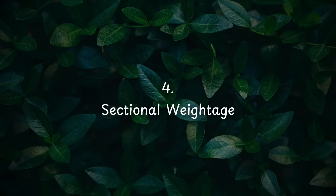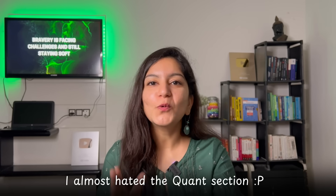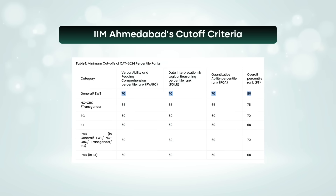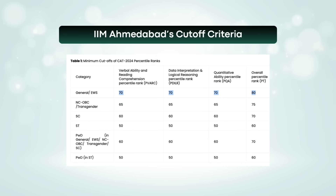The fourth point is sectional weightage — understanding which section carries what importance in the overall exam. I will give my own example: I was a non-engineer and didn't have a math background, so the Quant section was never my strength. My goal for Quant was simply to clear the sectional percentile cut-off, which for top IIMs is around 80 to 90 percentile. If you don't meet the cut-off in every section, you won't get admission. So Quant was a section that could not boost my overall percentile, but clearing the cut-off was very important.